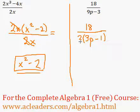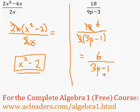Now, I can divide top and bottom by 3. 18 divided by 3 is 6, and 3 divided by 3 is just 1. So this can be simplified into 6 over 3p minus 1.